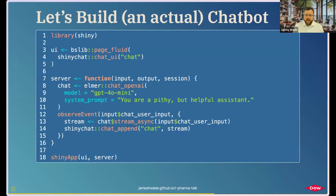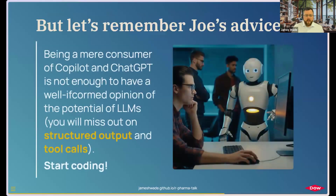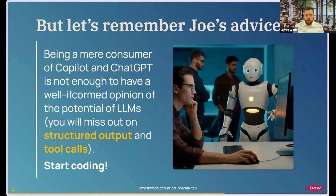We can take this and build it into an actual chatbot by bolting on that backend, like you saw from Joe before, where we're really talking about less than 10 lines of code to have a functional chat interface. This one is a bit simple, and I would challenge all of you who want to build some of these capabilities to go well beyond this. To do that, we can go back to some of the advice that Joe gave: we want to use programmatic approaches to access these APIs. I want to emphasize again the structured output, tool calls, and the power that you can use for these.